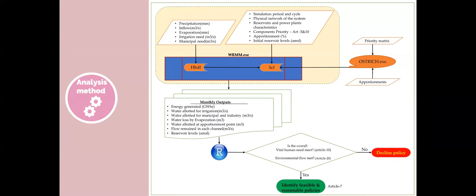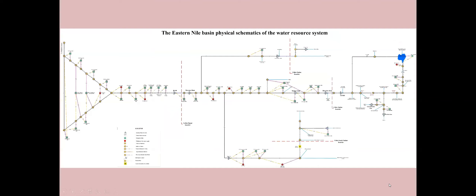This is the physical schematics of the Eastern Nile system, running from Lake Tana to the Nile Delta in Egypt to the Mediterranean from the Blue Nile, and from downstream of the Sudd wetland to Khartoum on the White Nile, and from the Tekeze River to Atbara on the Tekeze-Atbara River. This is the schematics introduced into our model.